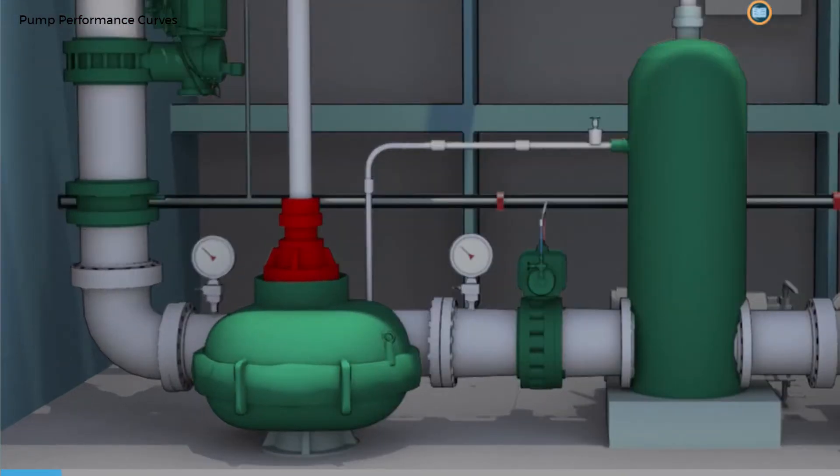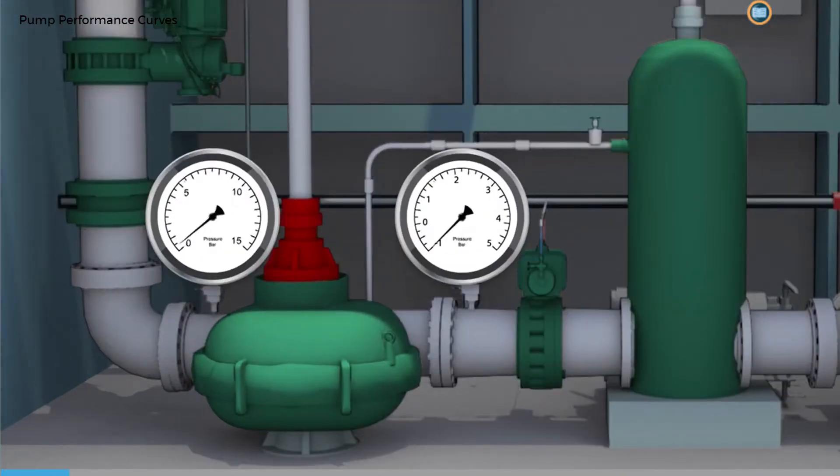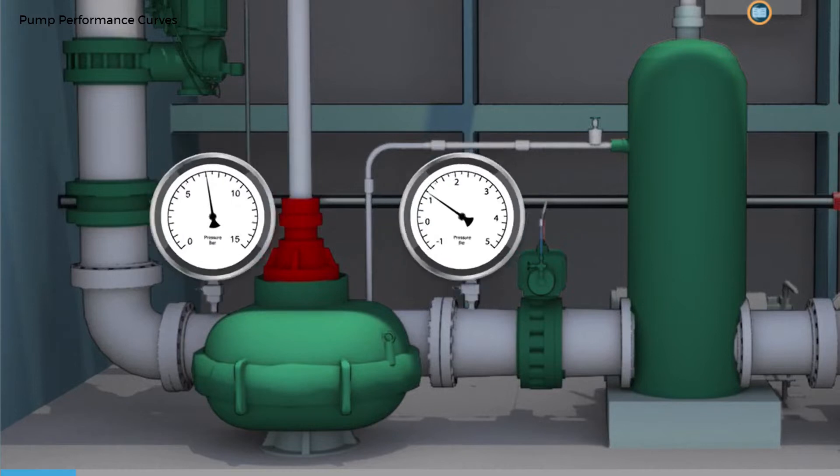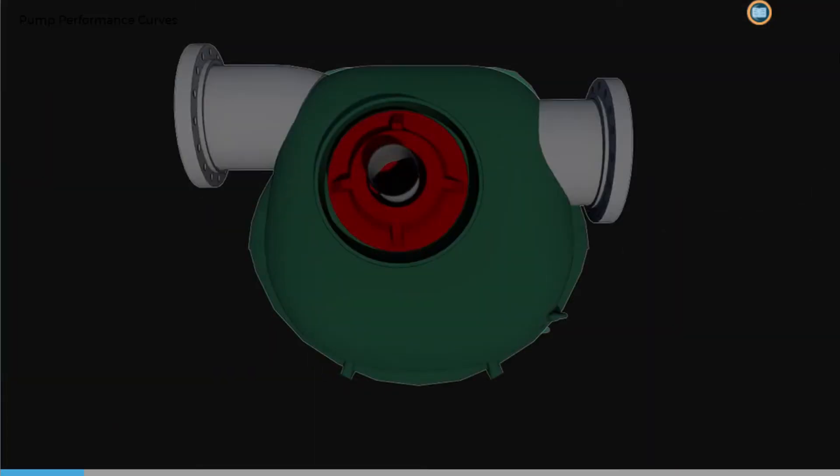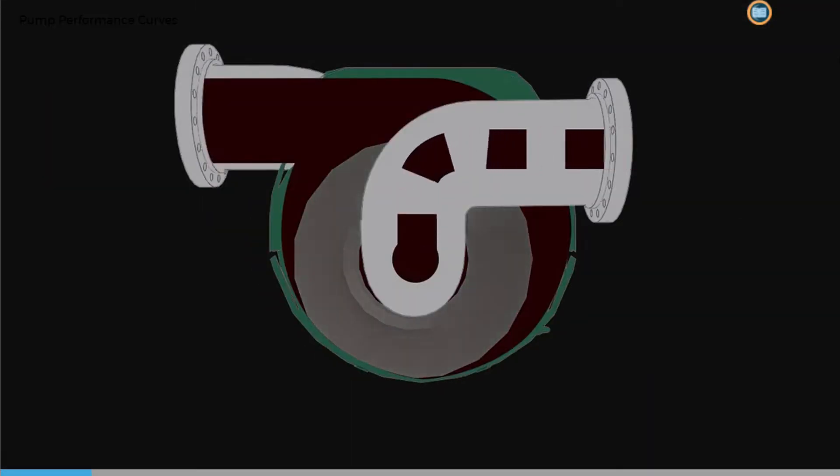As crude enters the pump, the rotating impeller speeds up the liquid. The crude then slows down as it passes through the narrow part of a spiral funnel-shaped chamber, called a volute.